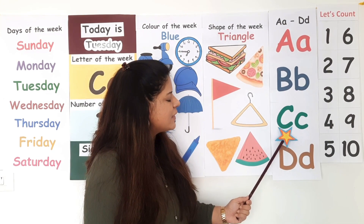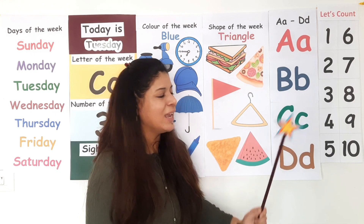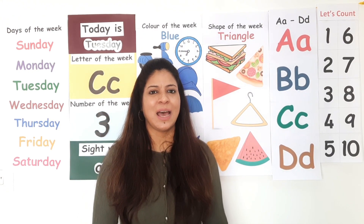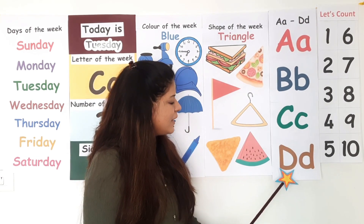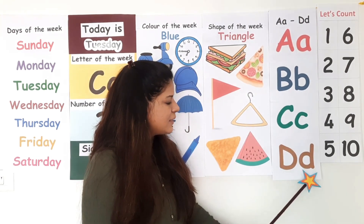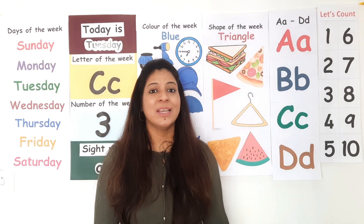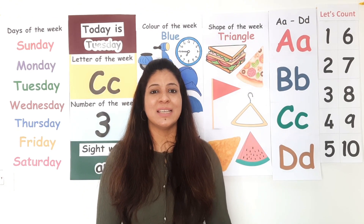This is uppercase letter C; this is lowercase letter C. Letter C makes the sound K. This is uppercase letter D; this is lowercase letter D. Letter D makes the sound D. Repeat after me — D. Well done!